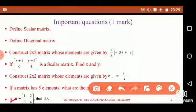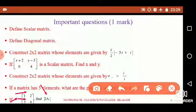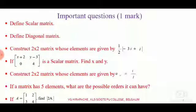Moving to the next question: if matrix A of order 2×2 has elements 1, 2 in the first row and 3, 4 in the next row, find |2A|. To find the determinant of 2A, first get the matrix 2A by scalar multiplication, then evaluate the determinant of second order.